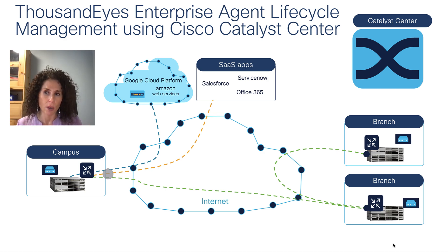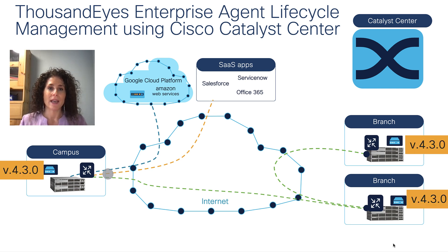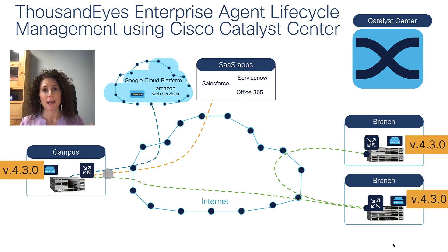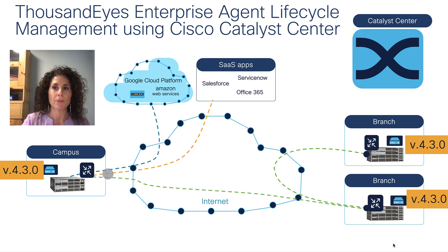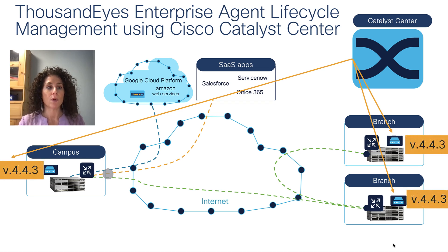Cisco Catalyst Center can do it for you and can do all this in bulk. The second thing we can do, once the agent is installed, is manage the lifecycle of the actual agent. When we installed the ThousandEyes agent the version available was 4.3.0 — that's the version now across a thousand branches. What if we want to upgrade to the latest version, which is now version 4.4.3? That's one of the benefits of having Catalyst Center managing the ThousandEyes agent.